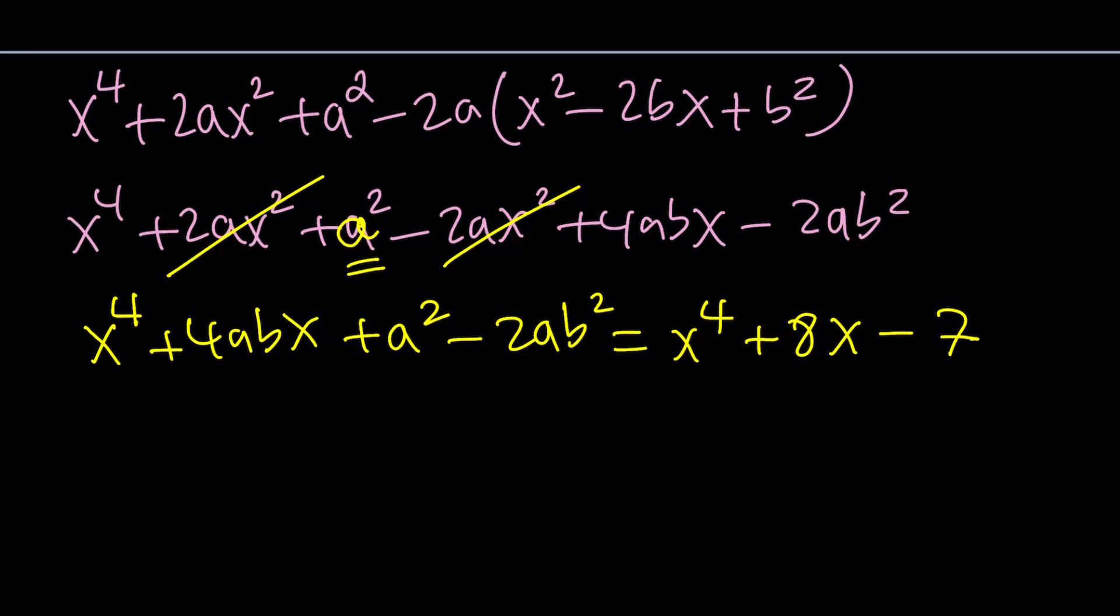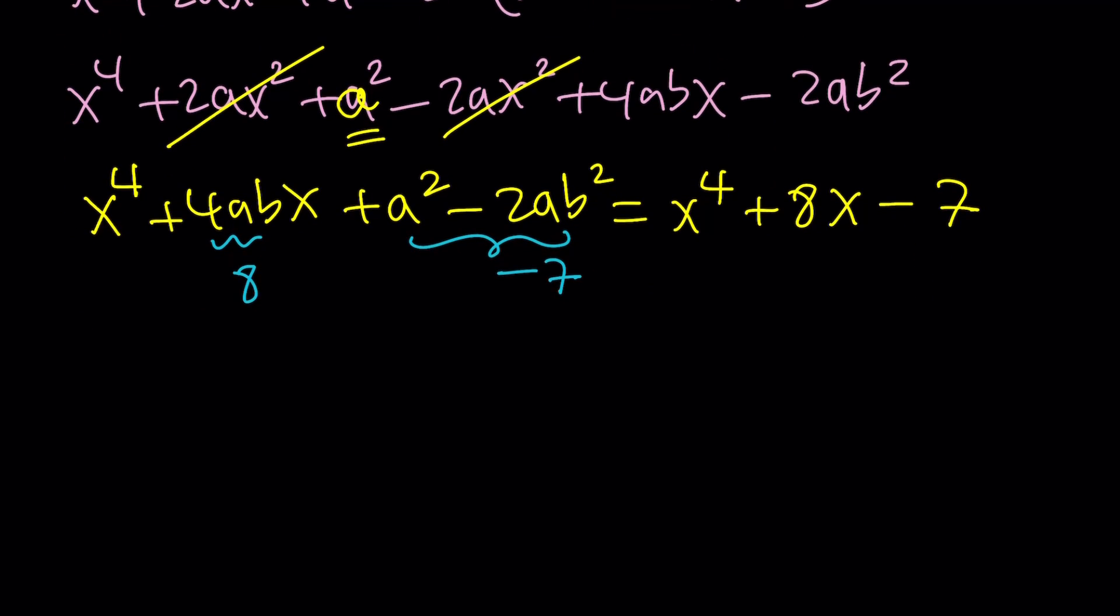From here, we should be able to solve for a and b. I'm going to set the coefficient of x equal to 8 and set the constant term equal to negative 7. This gives us a system: 4ab equals 8 implies ab equals 2, and the second equation gives us a squared minus 2ab squared equals negative 7.